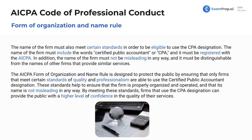Continuing on, the name of the firm must also meet certain standards. In order to be eligible to use the CPA designation, the name must include the words 'certified public accountant' or 'CPA,' and you have to register with the AICPA. In addition, the name must not be misleading in any way, and it must be distinguishable from the names of other firms that provide similar services.